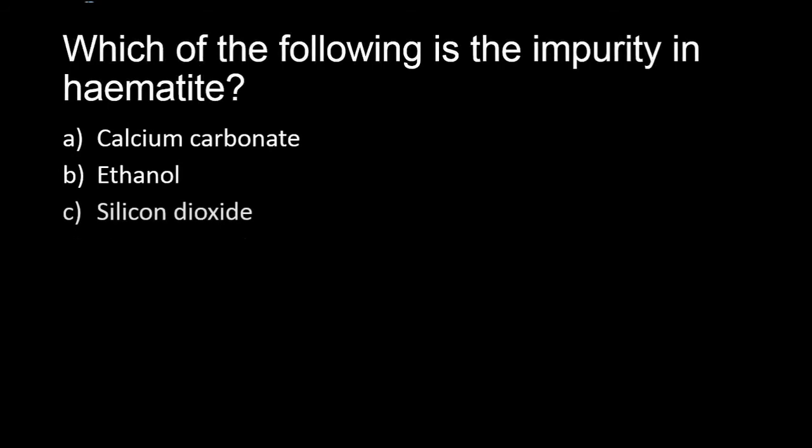Which of the following is the impurity in hematite? A. Calcium carbonate, B. Ethanol, C. Silicon dioxide, D. Carbon dioxide. Well, the correct answer is silicon dioxide because this is also known as sand.